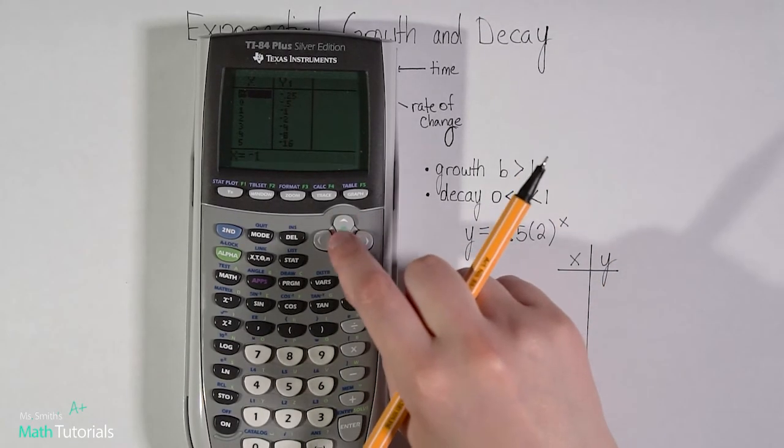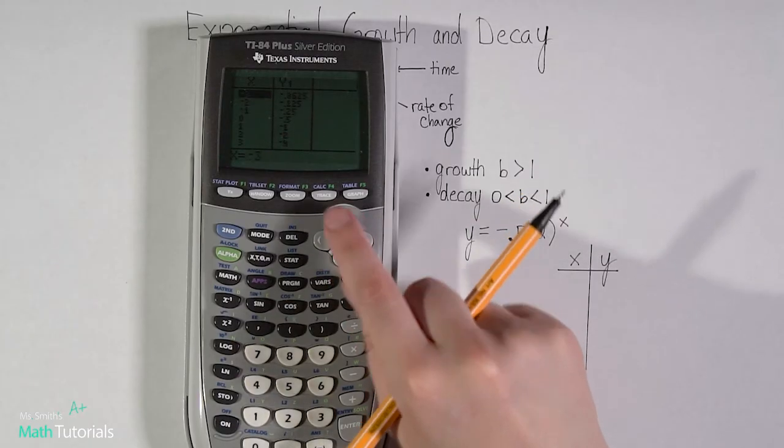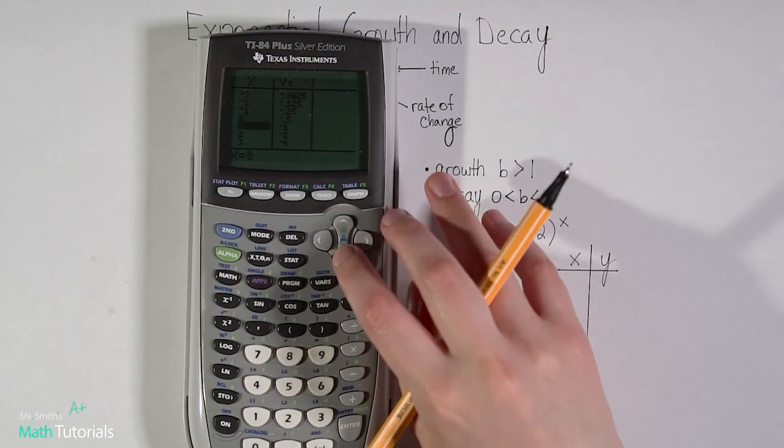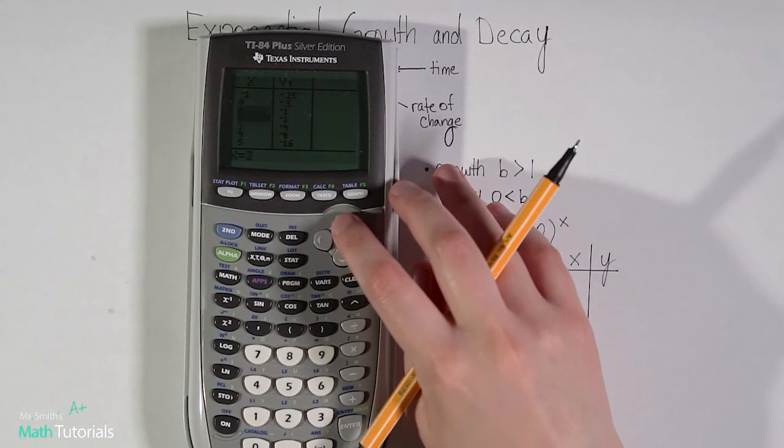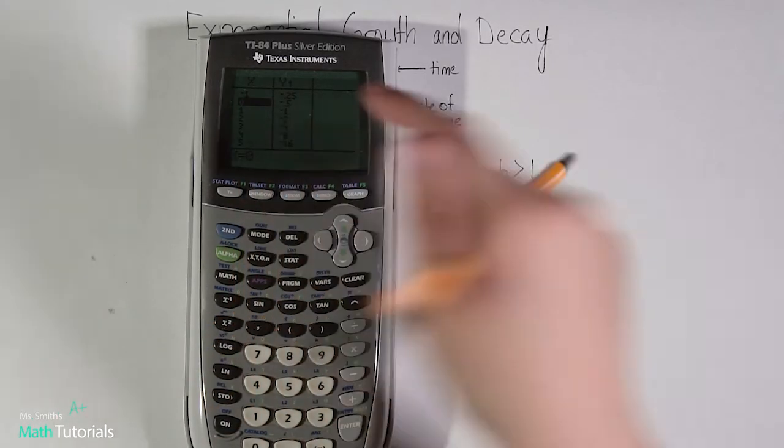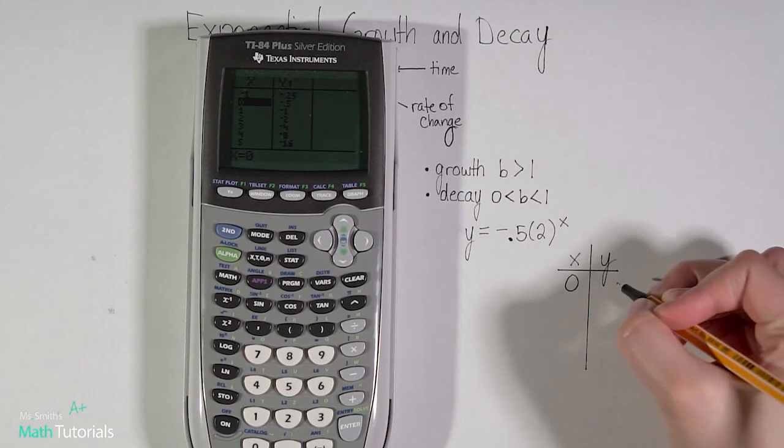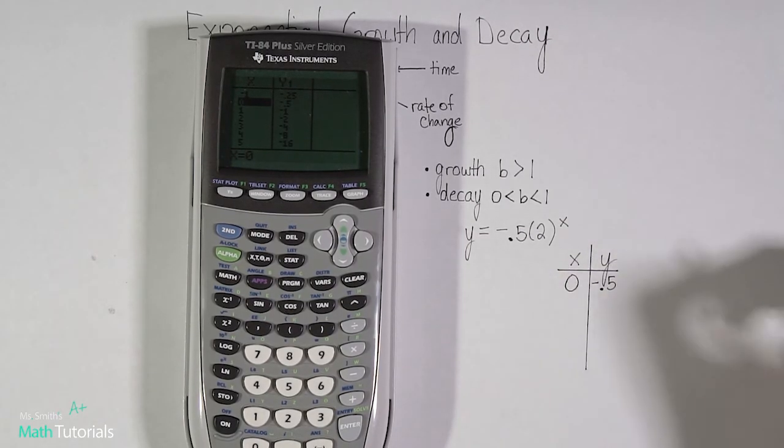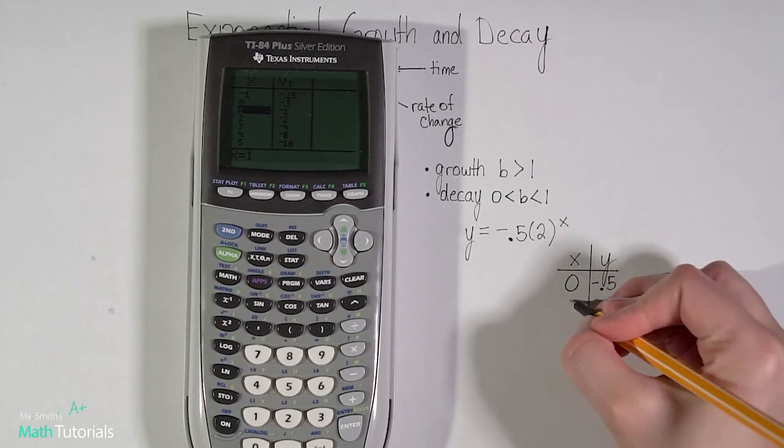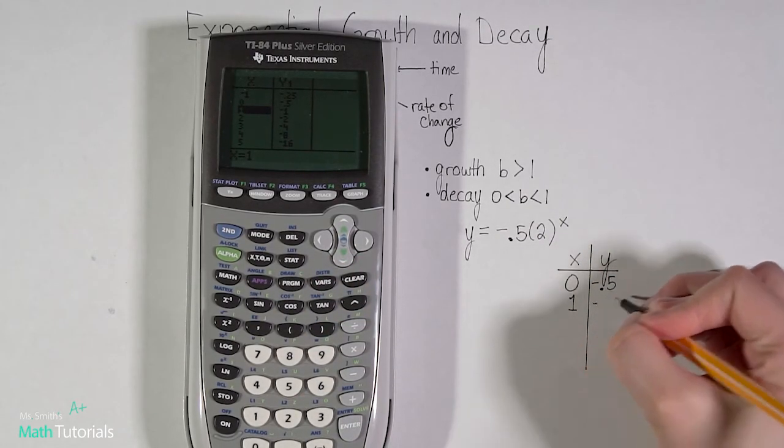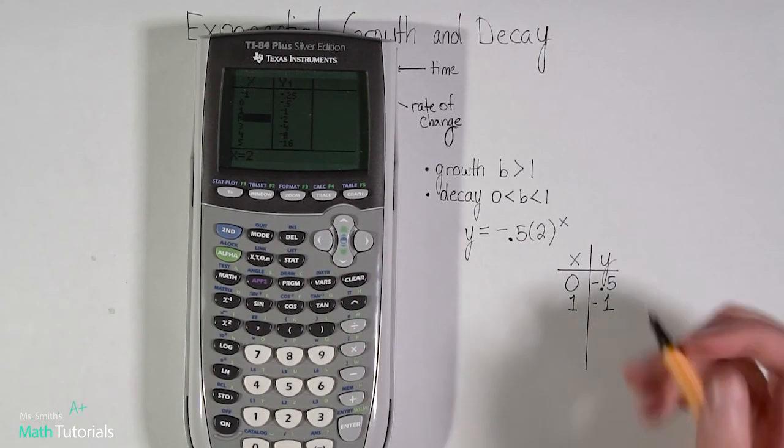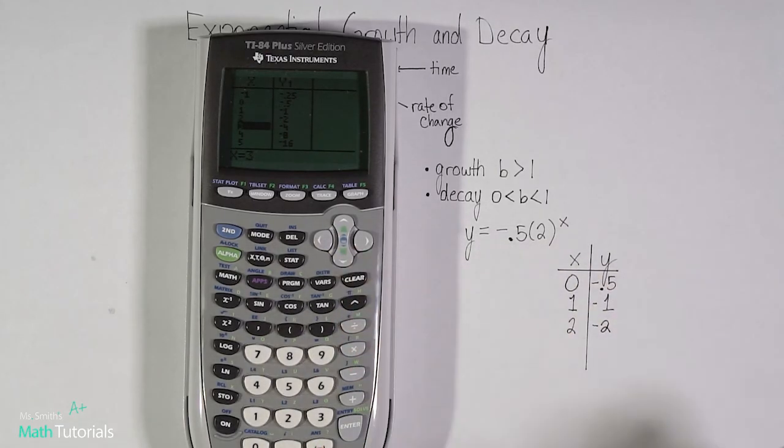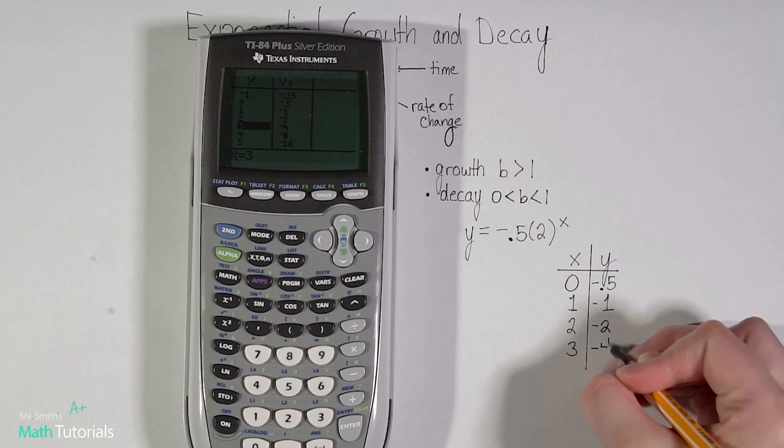So you want to pick out some good x values. You wouldn't want to pick negative 3 because that's going to give you this long decimal. We don't want to deal with that. So let's start with just things that look good. So 0 would be negative 0.5. So if x was 0, y would be negative 0.5 or negative one-half. What about if x was 1? Then y would be negative 1. What if x was 2? Y would be negative 2. What if x was 3? Y would be negative 4.